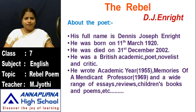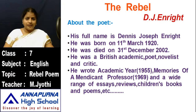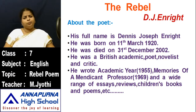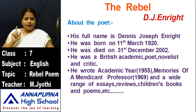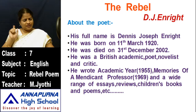Do you know that? D.J. Enright wrote this poem, 'The Rebel.' His full name is Dennis — D. means Dennis, J. means Joseph Enright. Dennis Joseph Enright.